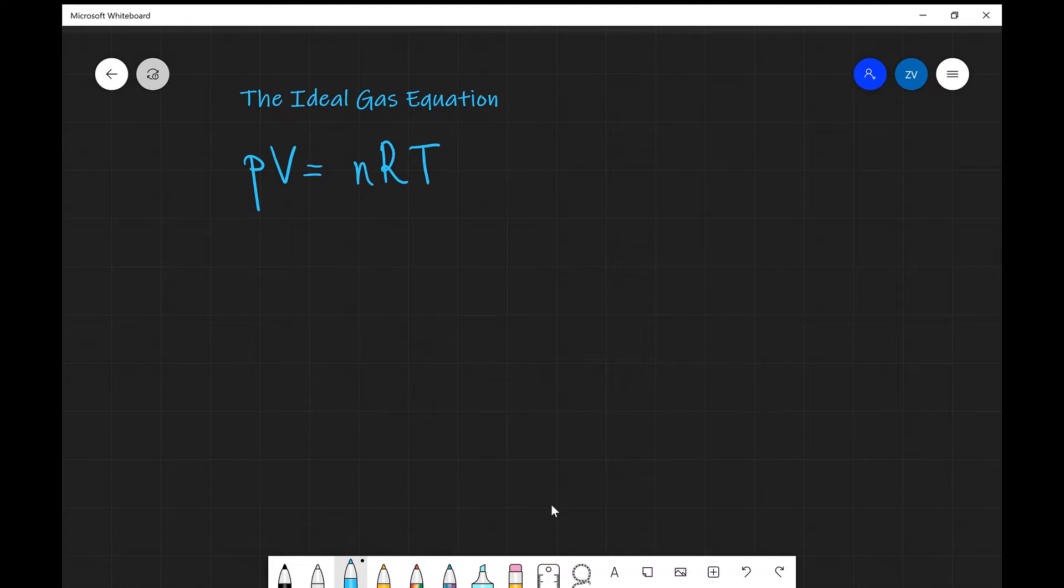What we're going to be discussing today is the ideal gas equation, PV is equal to nRT. This equation allows us to describe the features of a gas.